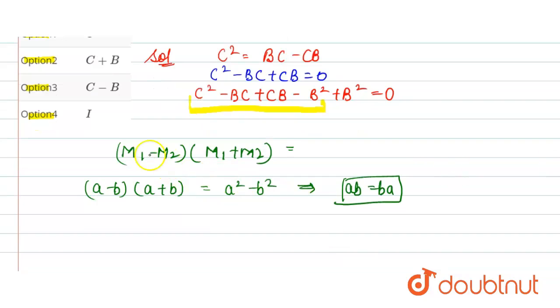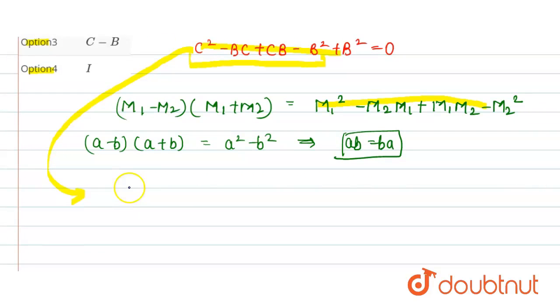So here in matrix, if we multiply this, then here we get M1 squared minus M2 into M1 plus M1 into M2 minus M2 squared. So here this is in the form of this. So we can write it as C minus B into C plus B plus B squared is equal to 0.